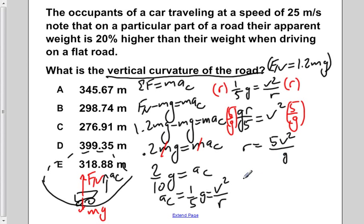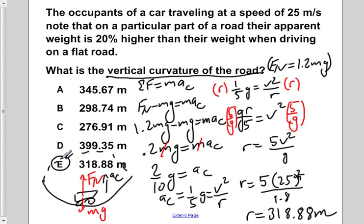If we now plug in our given values, r equals 5 times our velocity of 25 meters per second squared, divided by acceleration due to gravity, which is 9.8 meters per second squared. We would find that r is approximately equal to 318.88 meters, which corresponds to answer E.